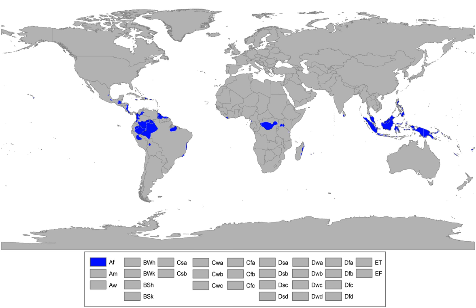Tropical rainforests have a type of tropical climate in which there is no dry season. All months have an average precipitation value of at least 60 mm (2.4 in), and tropical rainforests have no summer or winter. It is typically hot and wet throughout the year and rainfall is both heavy and frequent.